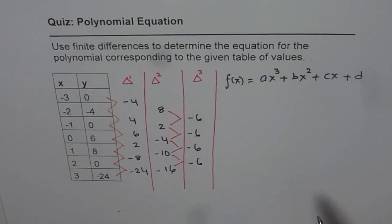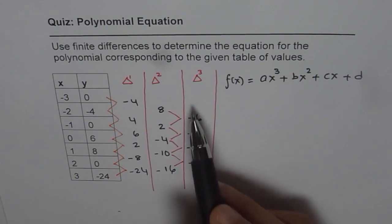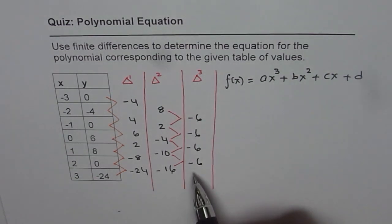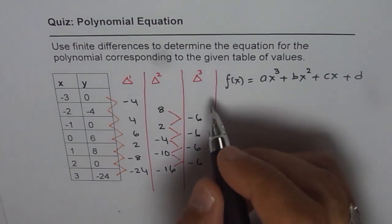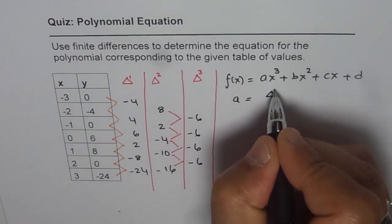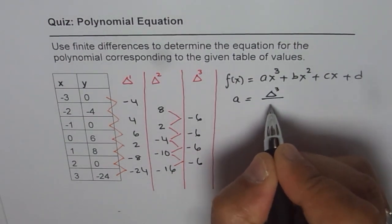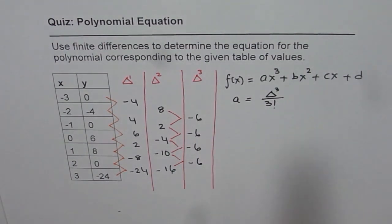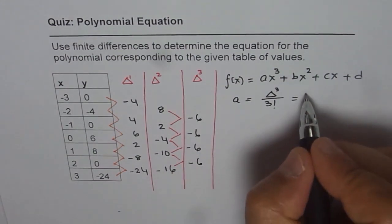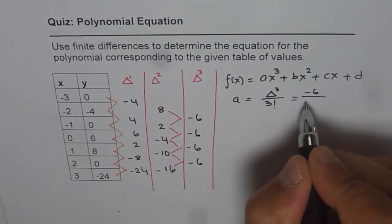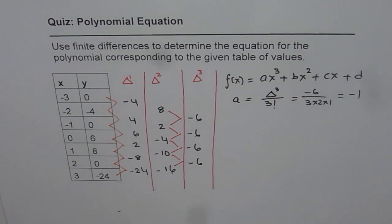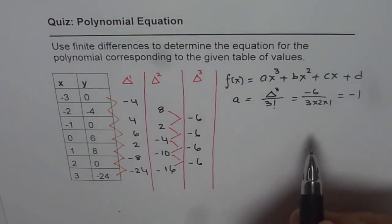There is another way: the leading coefficient is related to the finite difference. Since the third finite difference is minus 6, we can find a directly. In general, the formula is the nth finite difference divided by n factorial. So a equals minus 6 divided by 3 factorial, which is 6, giving us a equals minus 1.